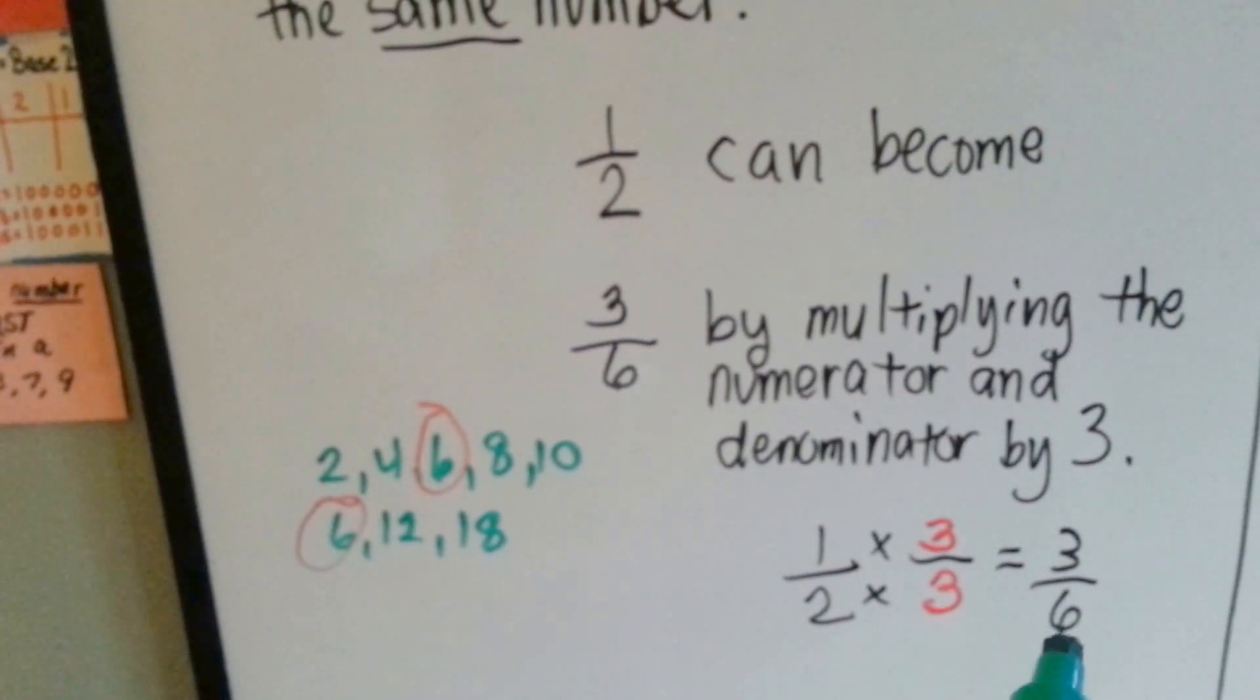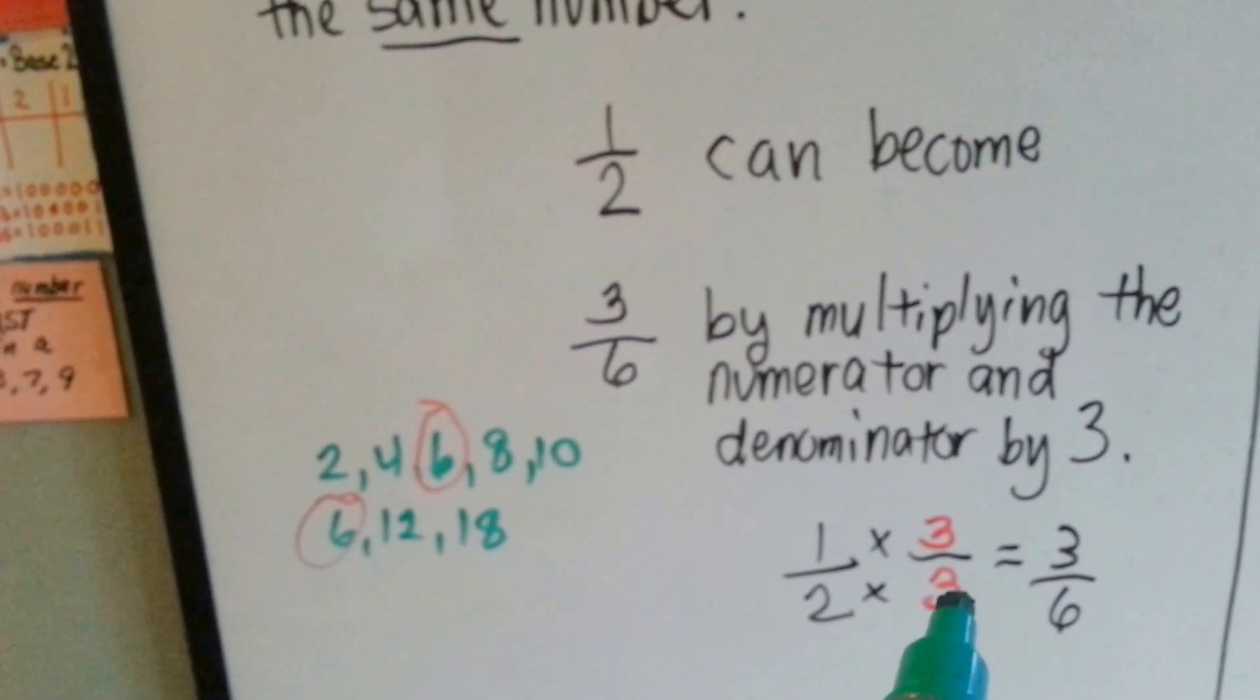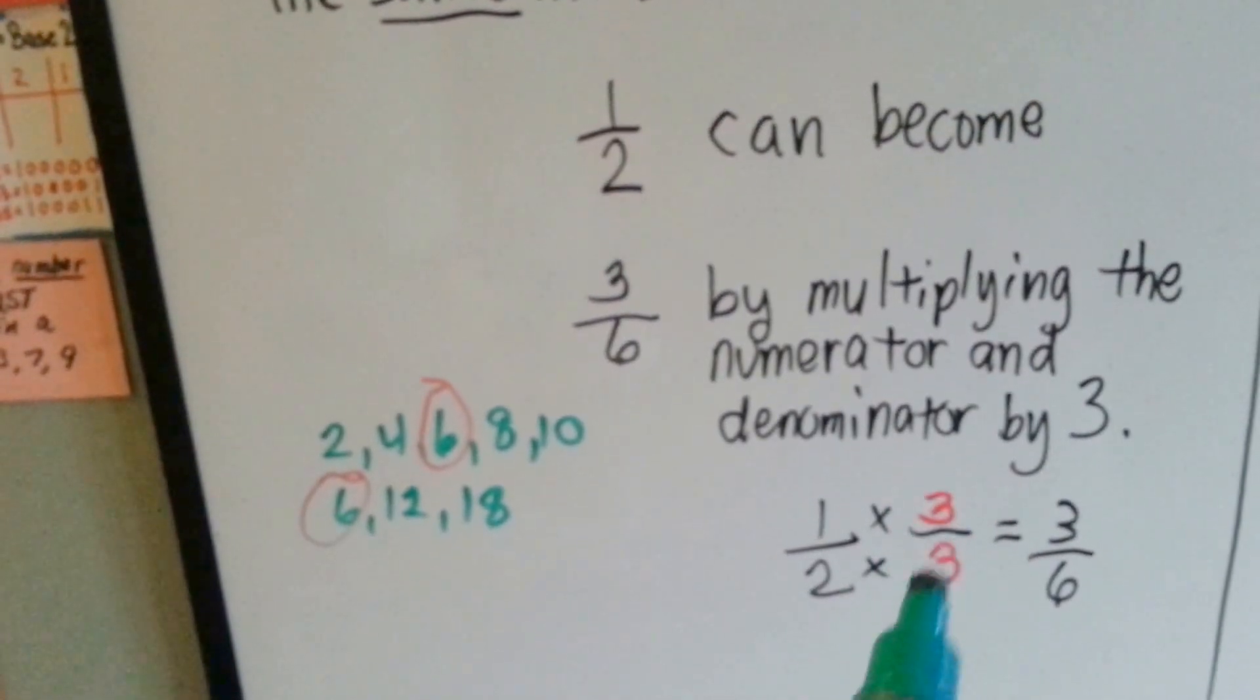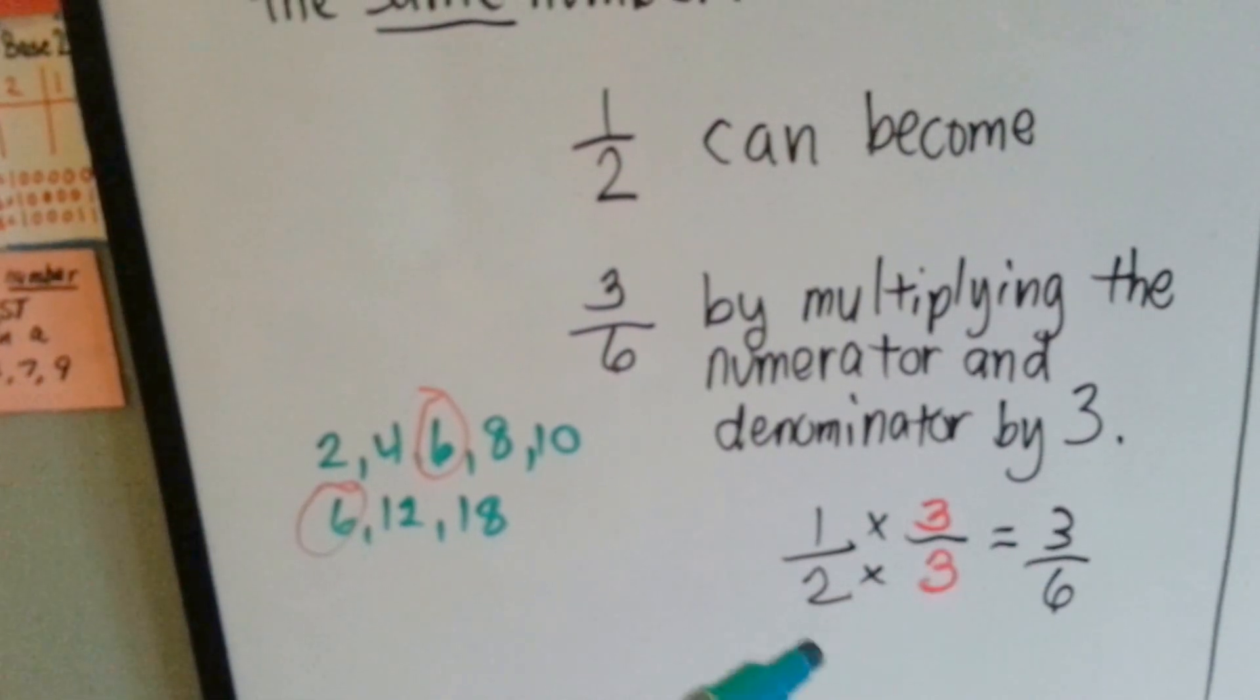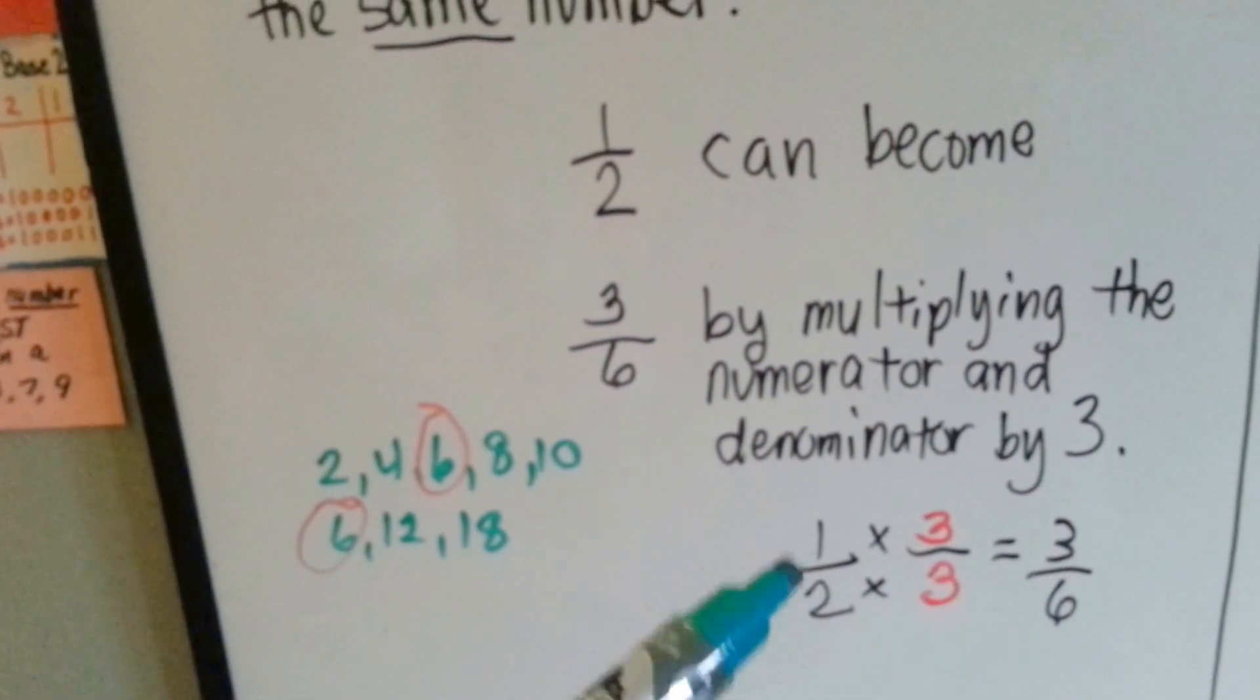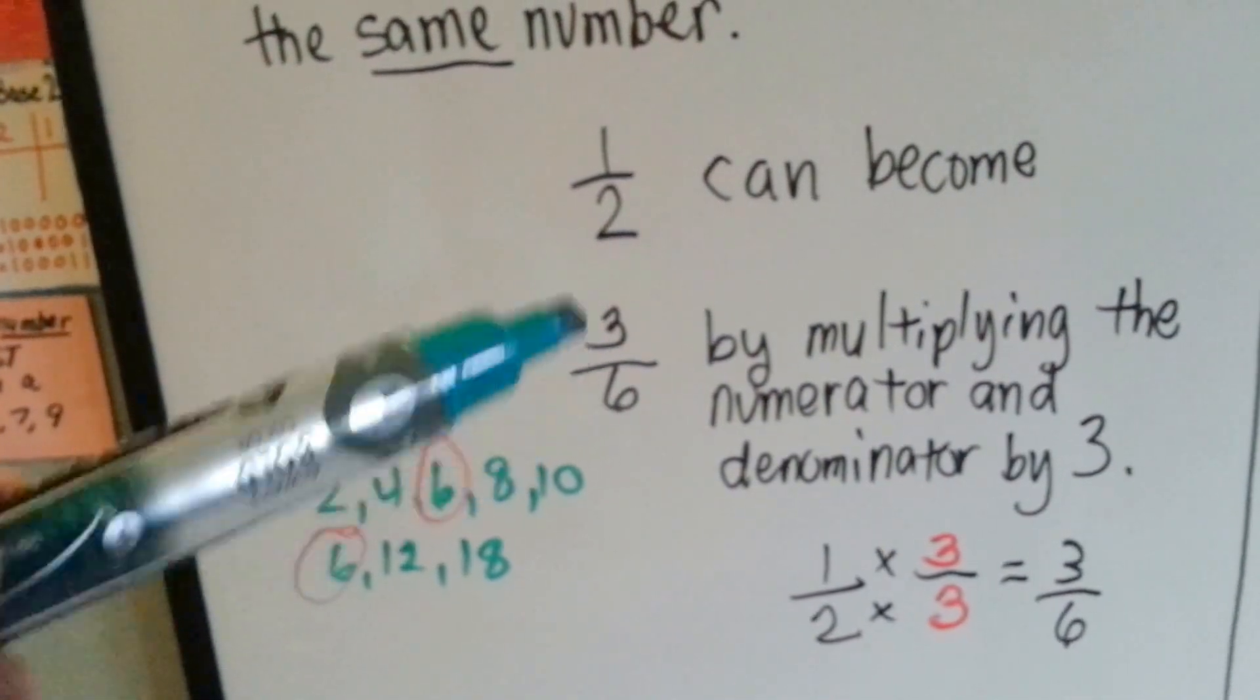For the 2 to become a 6, it has to be multiplied by 3. Well, the numerator gets jealous and he wants to be multiplied by 3. 1 times 3 is 3, 2 times 3 is 6, and 1 half becomes 3 sixths. If you have 3 of 6 parts, you've got half, right?